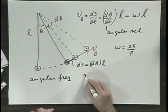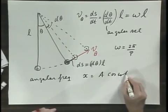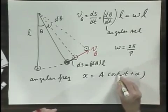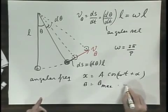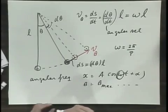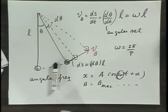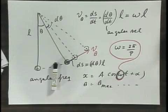The angular frequency shows up in the equation x equals A times cosine omega t plus alpha. Or if you want to write it down in theta, you can do that as well, of course. It's the same thing. This omega is called angular frequency.